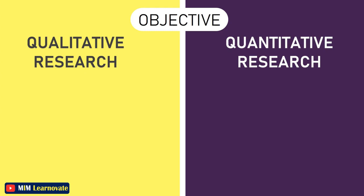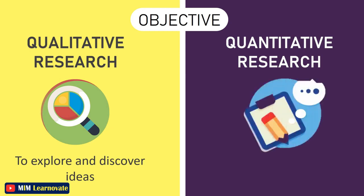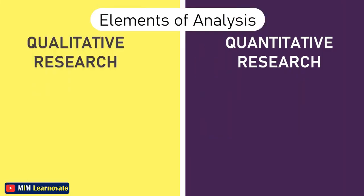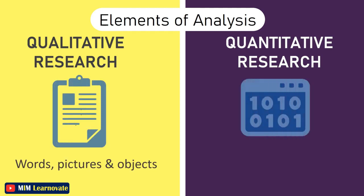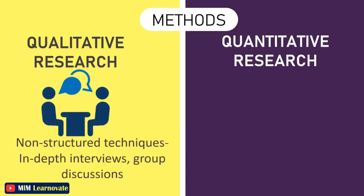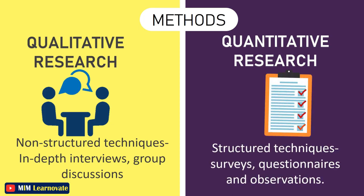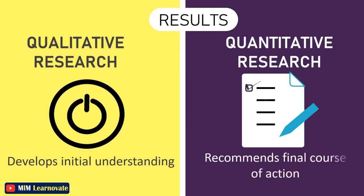Objective: qualitative research is conducted with the aim of exploring and discovering ideas used in ongoing processes, while in quantitative research the purpose is to examine cause and effect relationships between variables. Elements of analysis: qualitative research uses words, pictures, and objects, whereas quantitative research uses numerical data. Methods: qualitative research uses in-depth interviews and focus groups, while quantitative research uses structured interviews and observations. Results: qualitative research develops the initial understanding, whereas quantitative research recommends a final course of action.